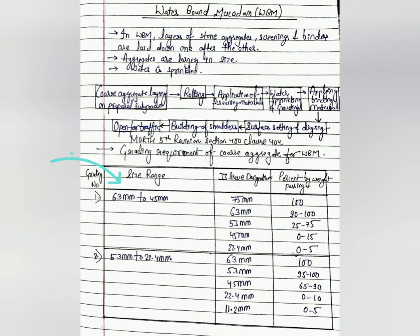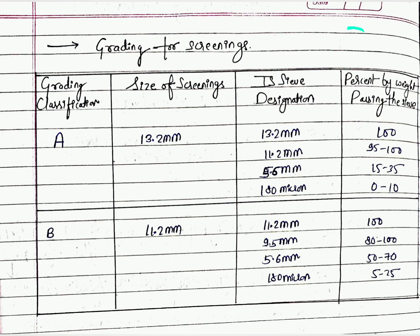Screenings are also used for WBM. The grading for screenings has Type A and Type B: Type A screening size is 13.2 mm, and Type B is 11.2 mm. IS designations and percentage by weight passing the sieve are mentioned in this table from MoRT&H fifth revision, Section 400.